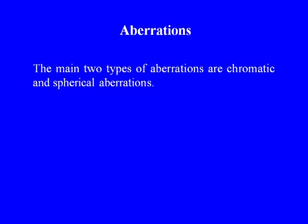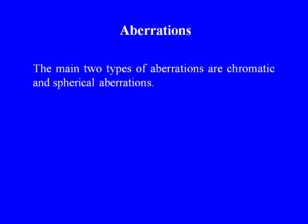Now let us discuss the other part of geometric optics: aberrations. Aberrations occur when lenses fail to bring all rays from a given point on an object to a unique focus, resulting in blurred or unclear images. There are two main types: chromatic aberration and spherical aberration.